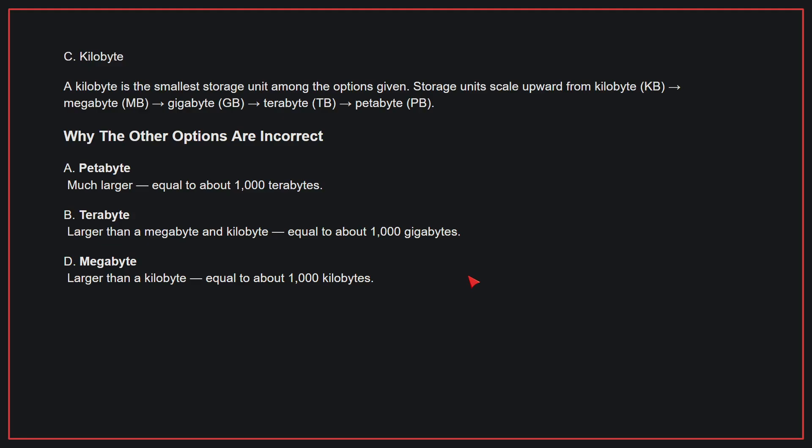Why the other options are incorrect: A, petabyte — this is much larger, equal to about 1,000 terabytes. B, terabyte — this is larger than a megabyte and kilobyte, equal to about 1,000 gigabytes. D, megabyte — this is larger than a kilobyte, equal to about 1,000 kilobytes. Therefore, the correct answer is C.